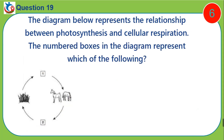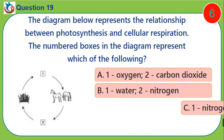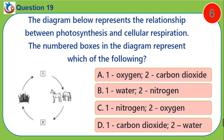Question nineteen: The diagram below represents the relationship between photosynthesis and cellular respiration. The numbered boxes in the diagram represent — which of the following is it? Options A, B, C, or D.